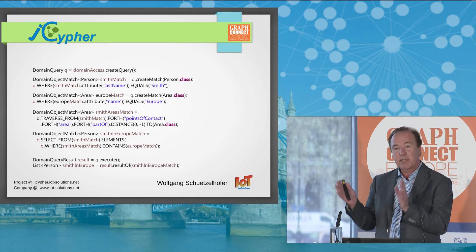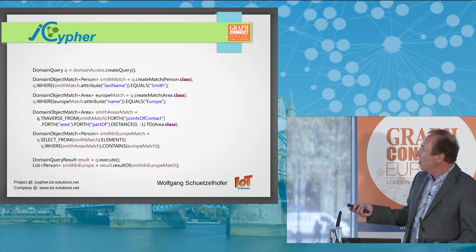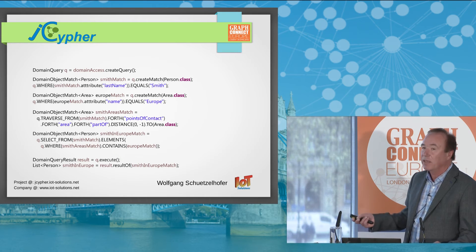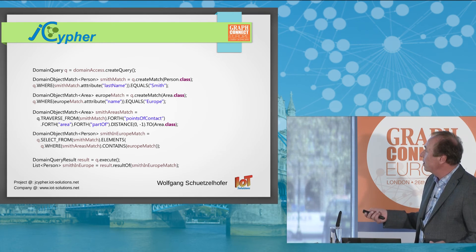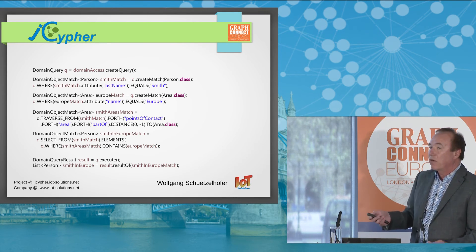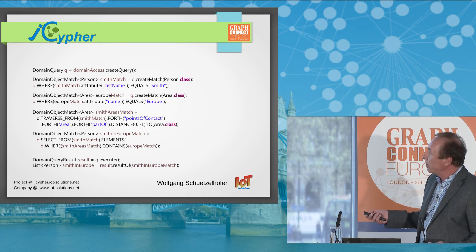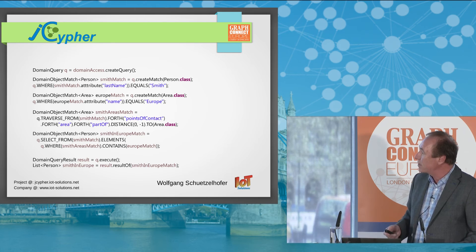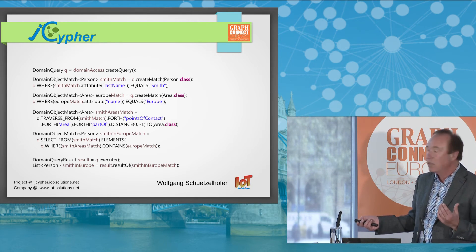In the next step, we collect all areas of all Smith's addresses. That's done with a traversal clause. We start traversing from Smith, forward via points of contact — we're at Smith's addresses — then continue forward via area, now at the immediate areas of the addresses. Then we recursively collect all areas reachable via the part-of attribute. This leads to another domain object match. Now to complete the query, we use a select clause.